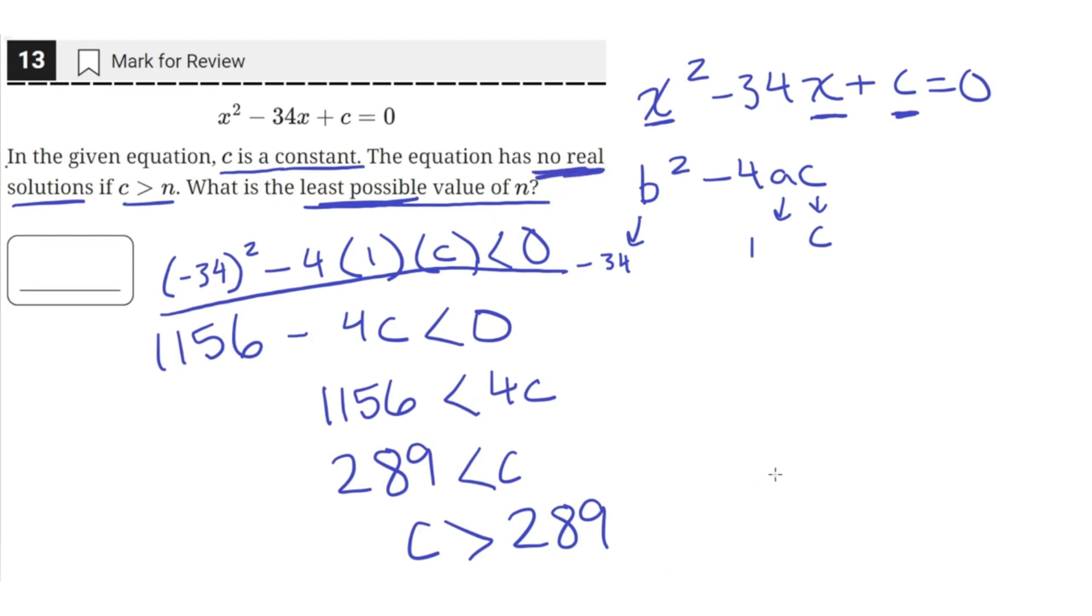So that means in the inequality c must be greater than n, n is equal to 289. So the least possible value of n is 289.